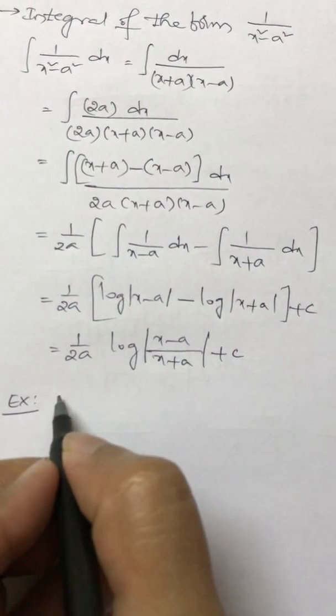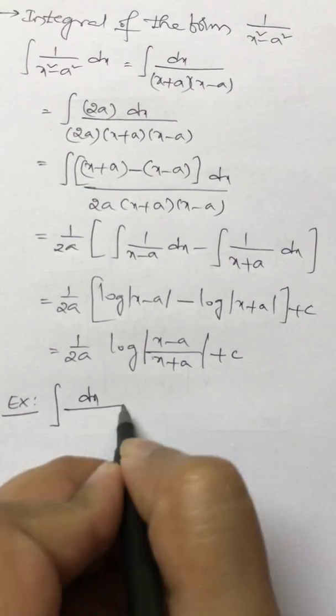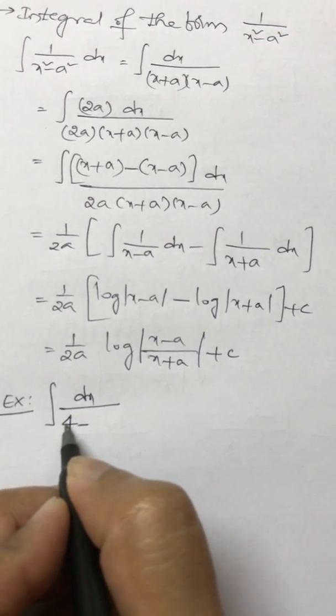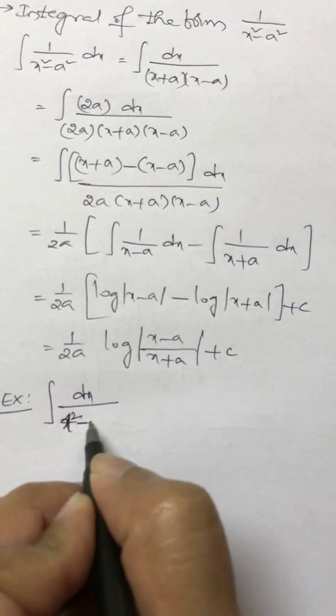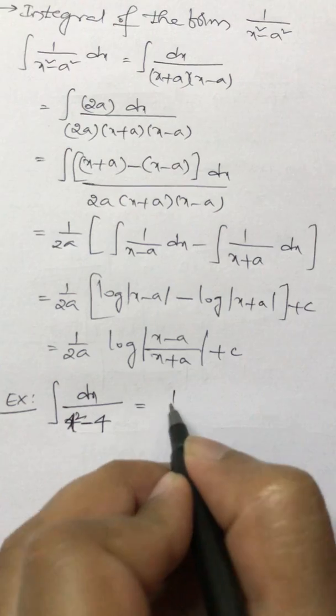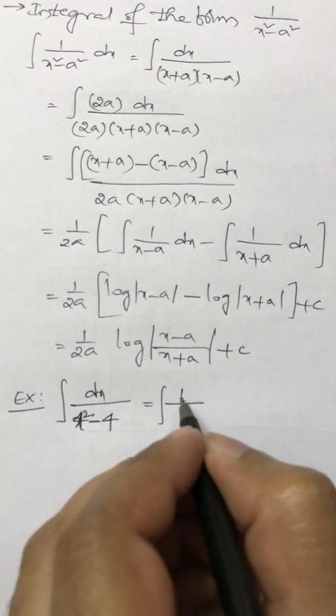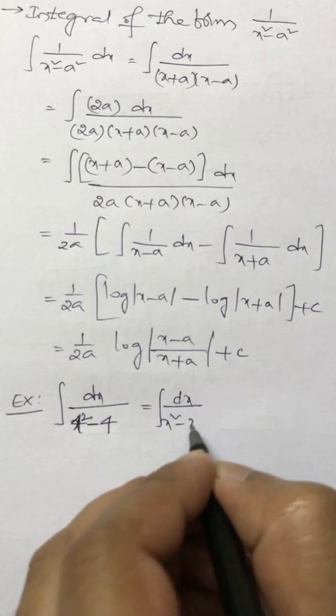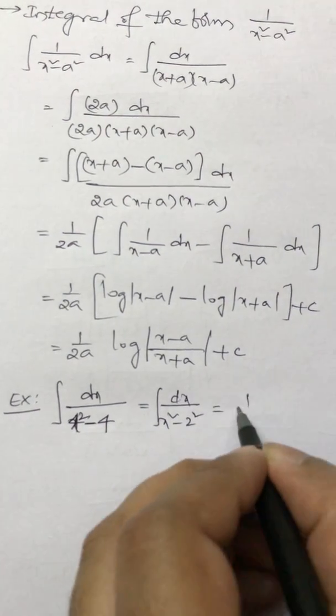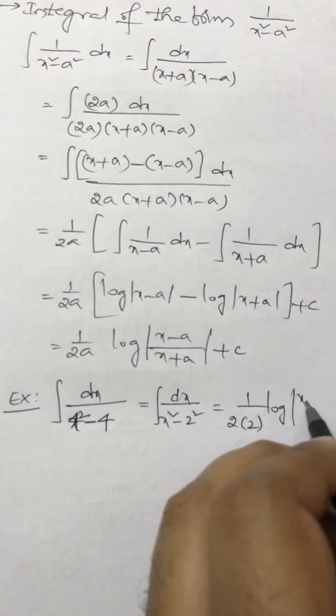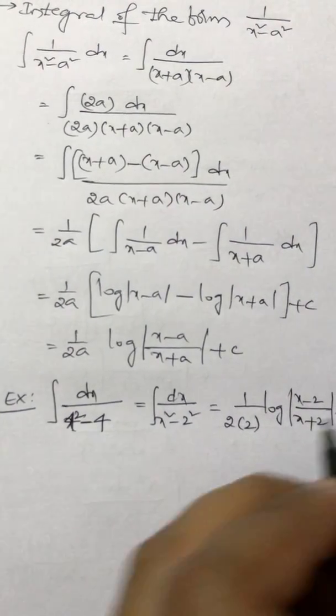So let us say if I look at an example. Integral dx by x square minus 4. So that is 1 by a is 2 here. So integral dx by x square minus 2 square. So 1 by 2 into 2 log mod x minus 2 by x plus 2.